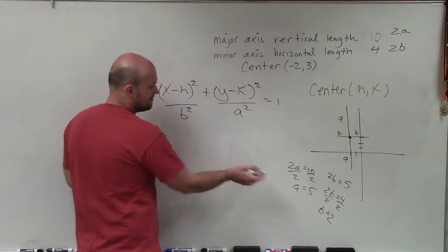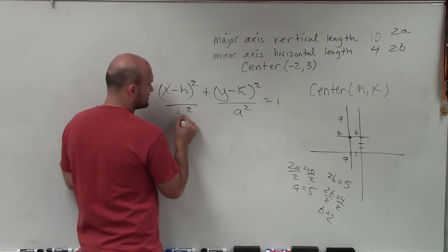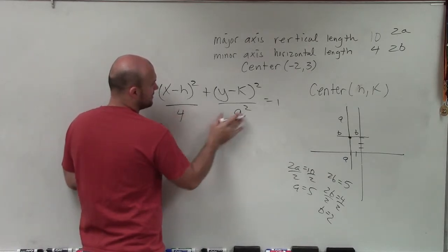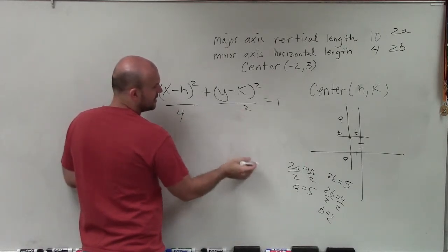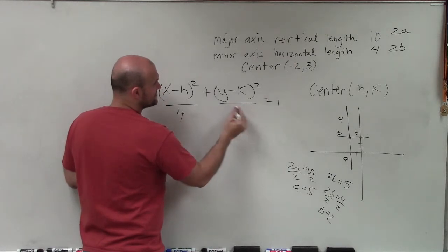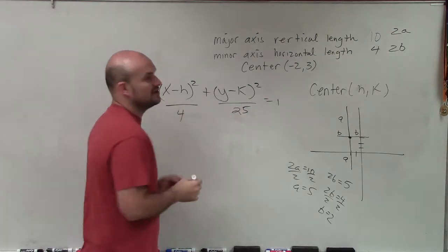So therefore, B equals 2, and 2 squared is 4. And A would be, A is 5, and 5 squared is 25.